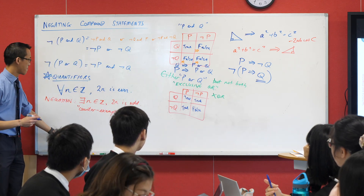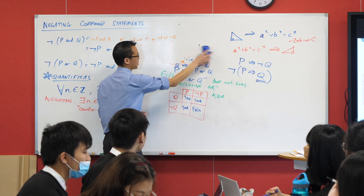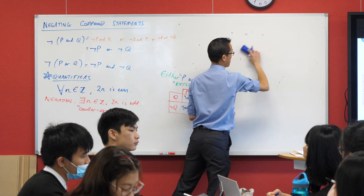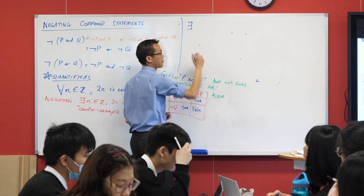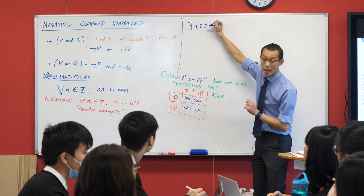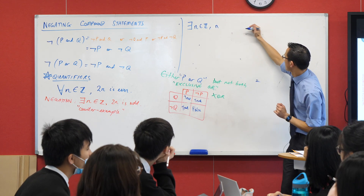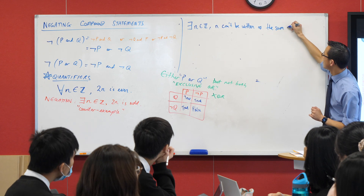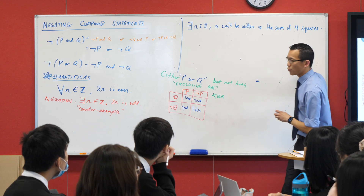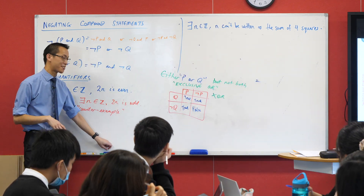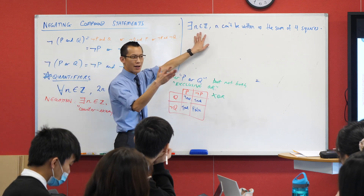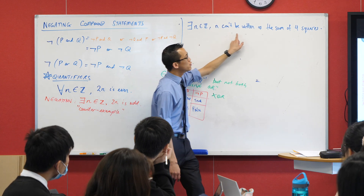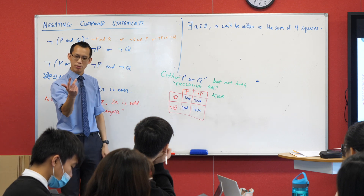I'm going to give you a 'there exists' statement — a really fun example I discovered at uni. There exists some integer n such that n can't be written as the sum of four square numbers. I'm suggesting that there's some number out there — say 100, 53, 4005 — whereby if you take that number, you can't write it as something squared plus something squared plus something squared plus something squared.